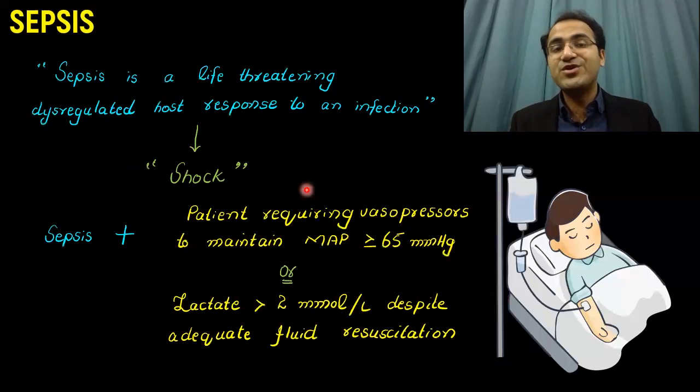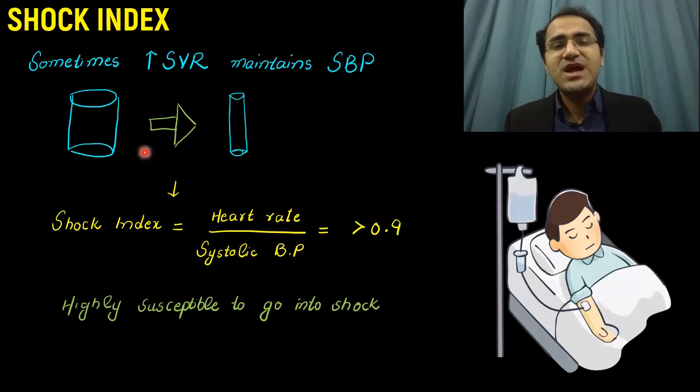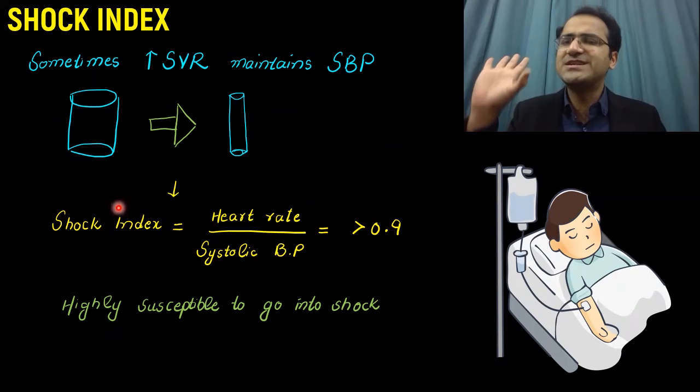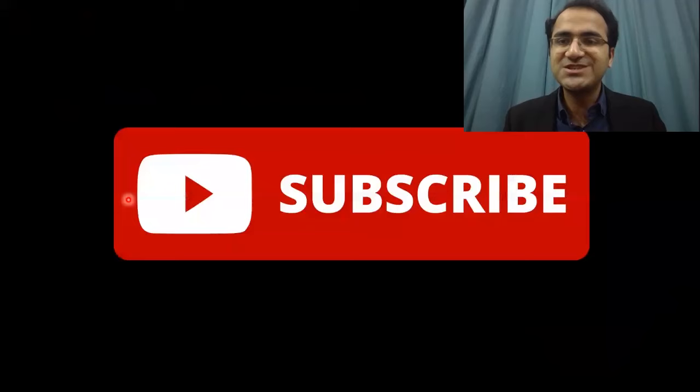In summary, we covered the definitions of sepsis and shock, how to assess a patient, high and moderate risk criteria, investigations, shock index for patients with normal blood pressure suspected of progressing to shock, and treatment with antibiotics, fluids, vasopressors, oxygen, and steroids, along with management of acute complications.